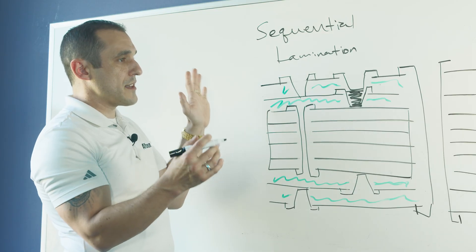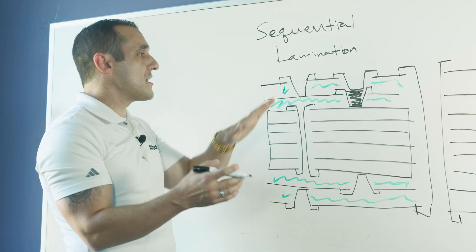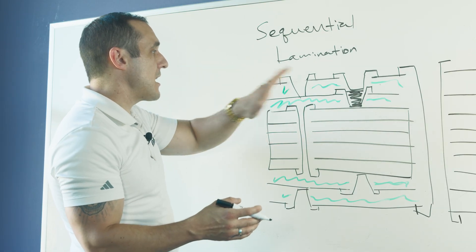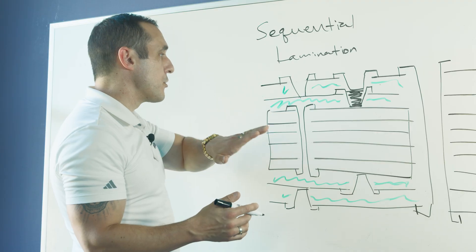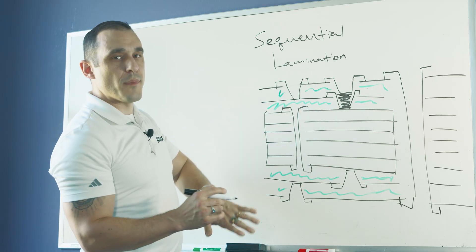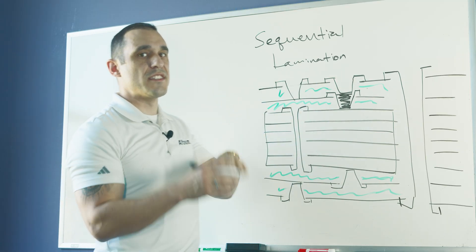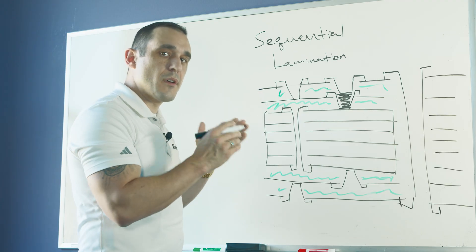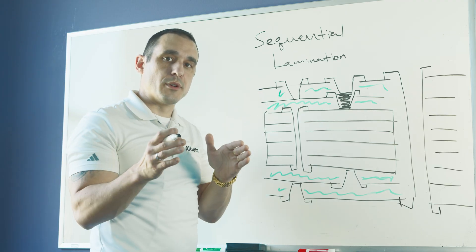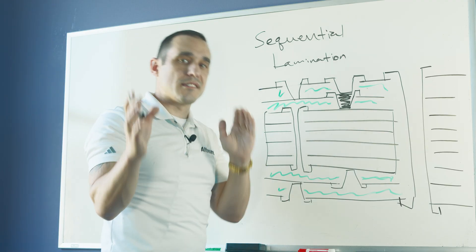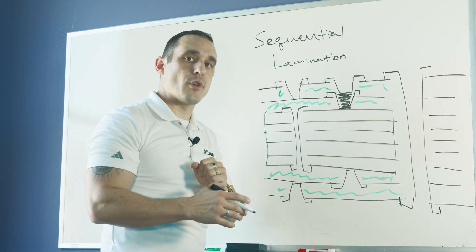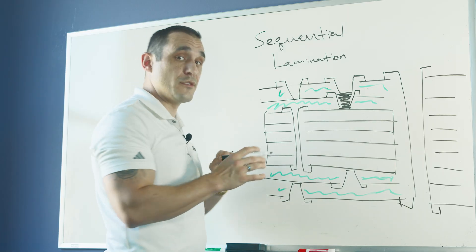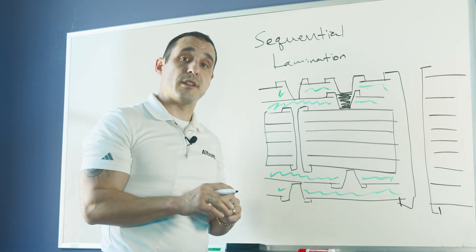The sequential lamination process is unique because it allows the stacking of blind and buried micro vias. This stacking of micro vias is not something you can do in a sub-lamination build. Let's look at the sub-lamination process to understand why stacking is not possible there.